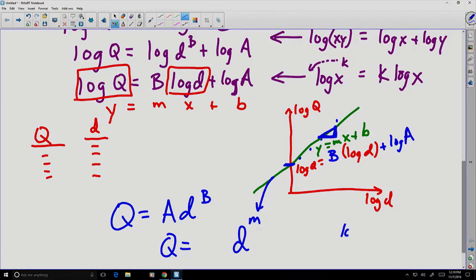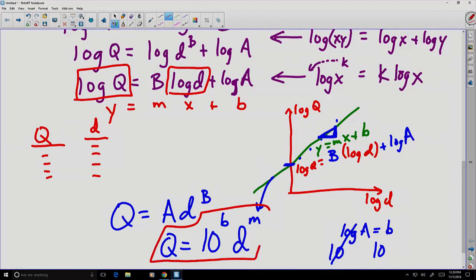And then I recognize that if logarithm of A is equal to b, I'm going to use the inverse of both of those, which is basically taking 10 to the exponent, which is the inverse function of the logarithm. And I can write it this way: 10 to the b power. So if I can find the m and I can find the b, I can rewrite my equation as Q is equal to 10 to the b power times d to the m-th power.